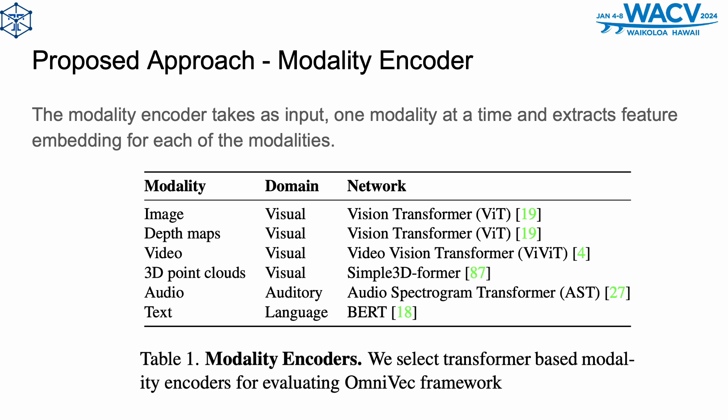The modality encoder takes as input one modality at a time and extracts feature embeddings for each of the modalities. In our proposed framework, the modality encoder can be a transformer, CNN, or can directly use raw signals. We do not assume any specific nature for the modality encoder. Therefore, the proposed framework allows incorporating any appropriate deep network as a modality encoder.